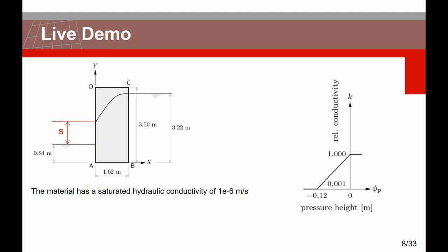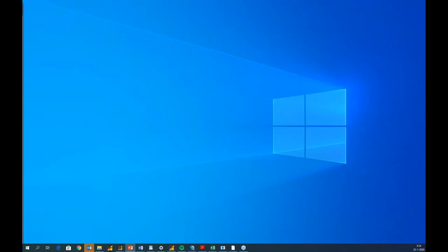Just before starting, here is a quick overview of the input data. The model is a rectangular vertical cross-section of 1.62 by 3.5 meters. Side BC has a potential head of 3.22 meters and the other side has 0.84 meters. We will determine the position of S on this edge. The material has a saturated hydraulic conductivity of 1E-6 meters per second, and the hydraulic conductivity is pressure-dependent as given in a graph.